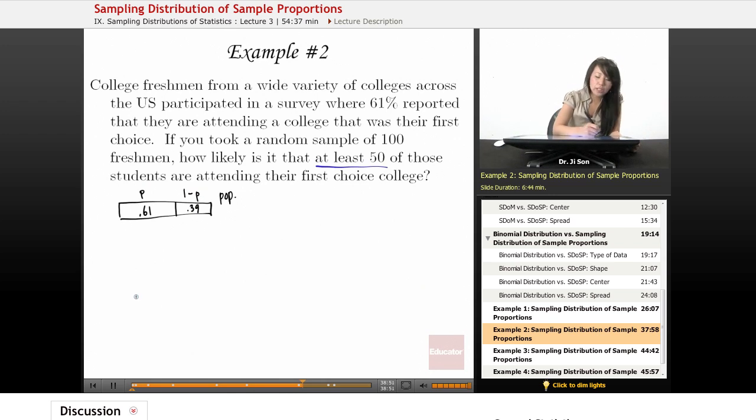So now, imagine taking out of that population a random sample of 100 students, 100 freshmen, and looking at the sample proportion and plotting that on the SDOSP. So SDOSP, 100 is still a pretty large N, so I'm going to go with that normal distribution.